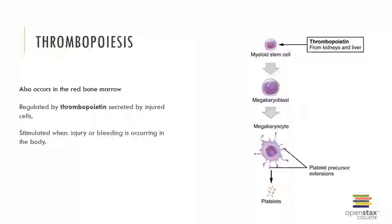Production of platelets or thrombocytes also occurs in the red bone marrow, but is initiated by thrombopoietin rather than EPO or cytokines. Again, we start with hemocytoblasts, which differentiate into myeloid stem cells that further divide to become megakaryoblasts, which mature to form megakaryocytes. Megakaryocytes are enormous multinucleated cells which pinch off membrane-bound packets containing enzymes and other chemicals necessary for blood clotting. Once in circulation, these packets are known as platelets.